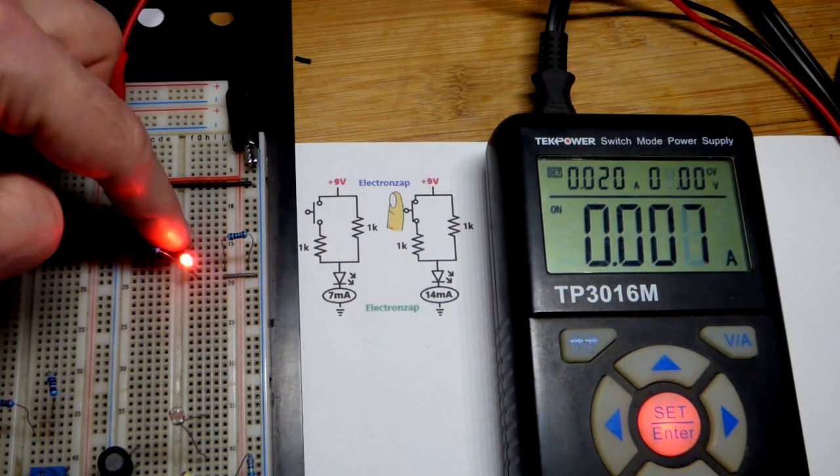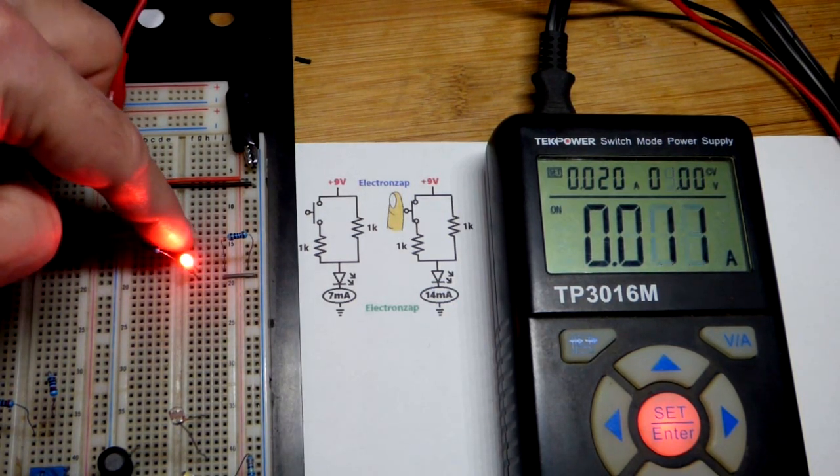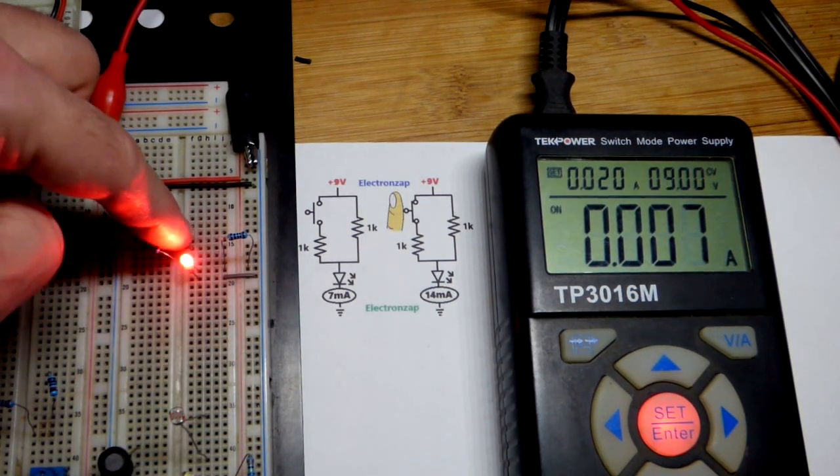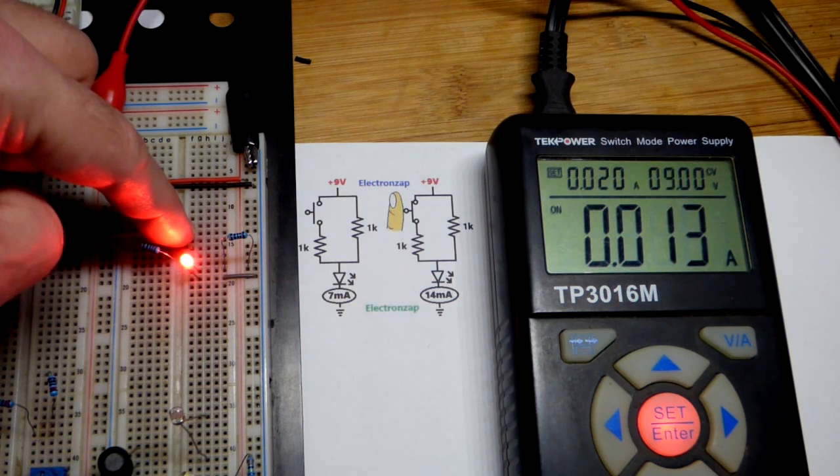When I press the switch, you should be able to tell that the LED is getting brighter. We could use a higher value resistor there so it's dimmer, so you can tell it's getting brighter easier, but in any case...